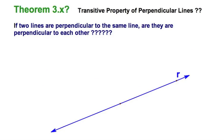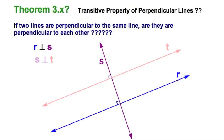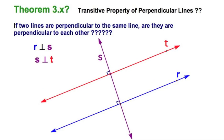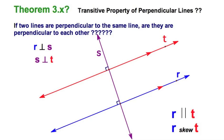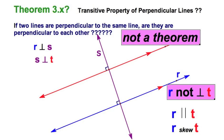Let's explore whether the transitive property applies to perpendicularity. Take line s perpendicular to r, then line t perpendicular to s. So r⊥s and s⊥t. If it were transitive, then r would be perpendicular to t — but that's just crazy. The red and blue lines don't look anything like perpendicular lines; if anything, they could be parallel or skewed. So this is not a theorem: perpendicularity is not transitive.